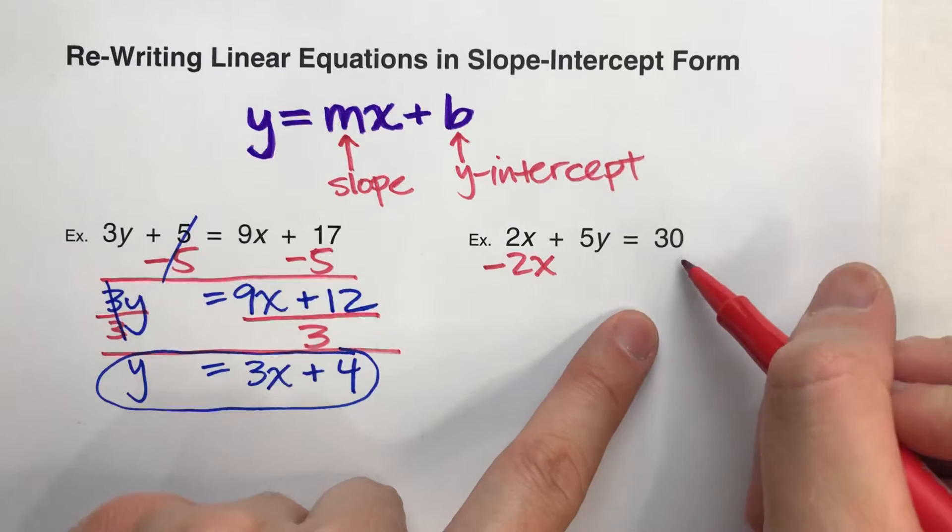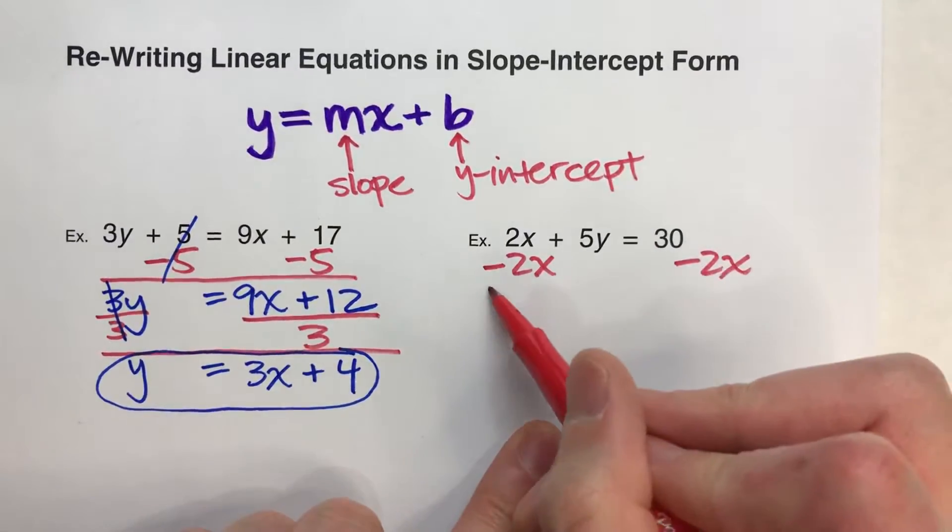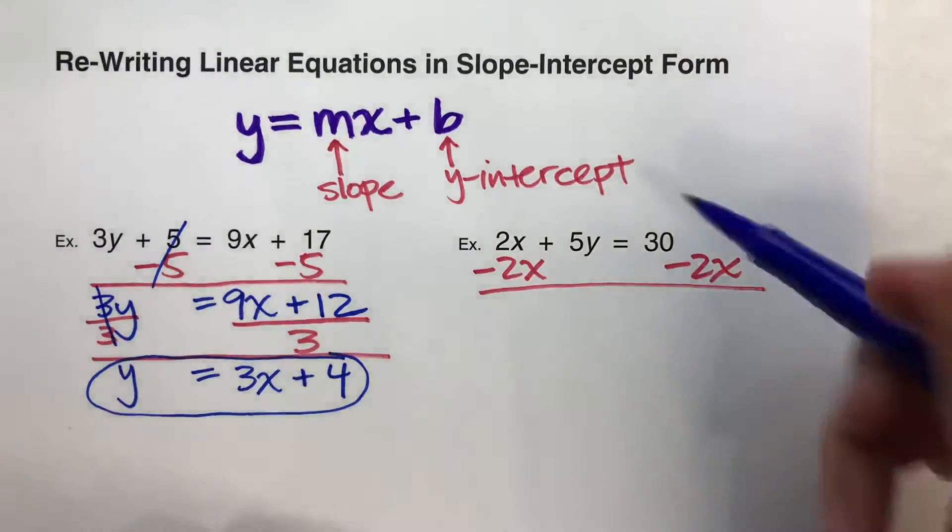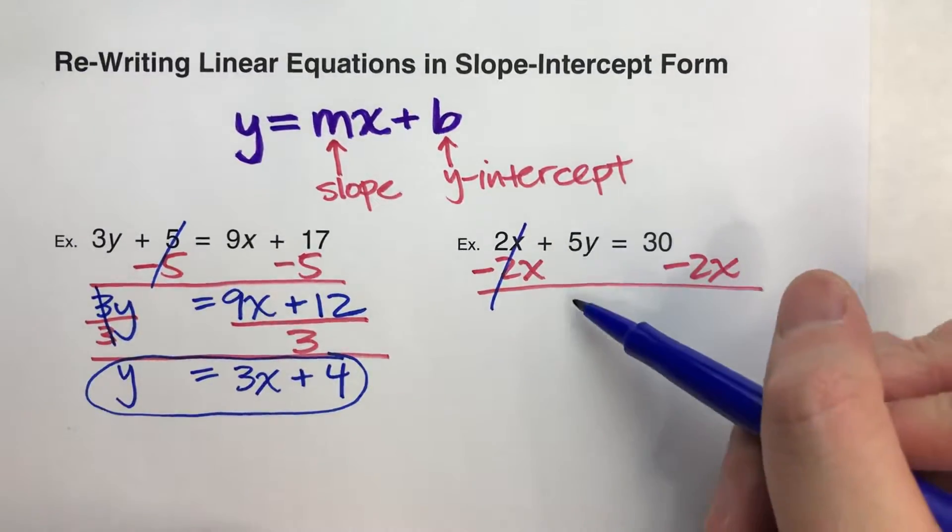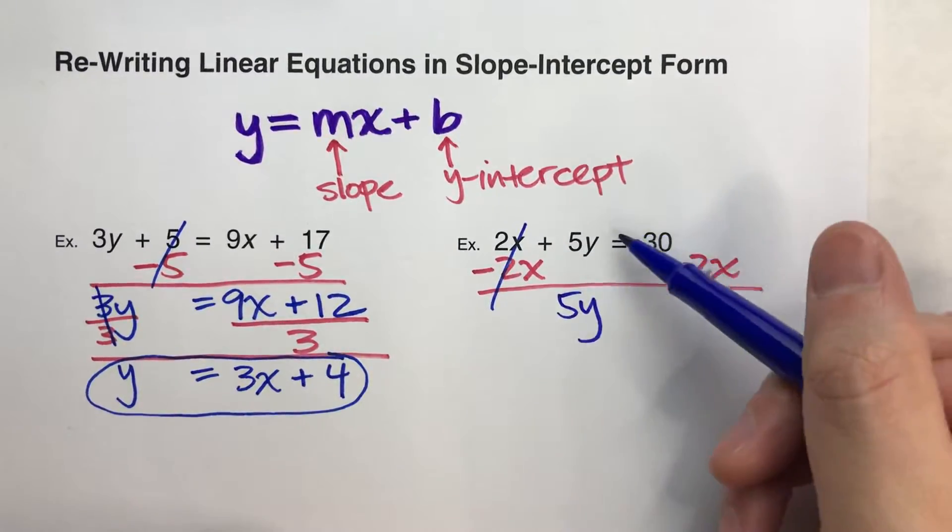What I do to one side, I have to do to the other. The 2x's undo each other, but the 5y drops down. The equals drops down.